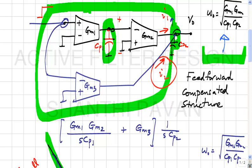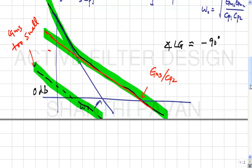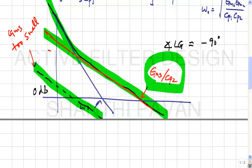This is feed-forward compensation. For stability, the unity loop-gain frequency must be much higher than √(GM1·GM2/(Cp1·Cp2)). For any negative feedback loop to be stable, at the unity gain crossover of the magnitude response, the slope must be as close to -20 dB/decade as possible — i.e., the system must look like a first-order system at high frequencies.